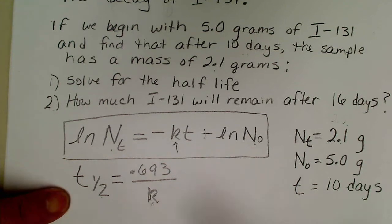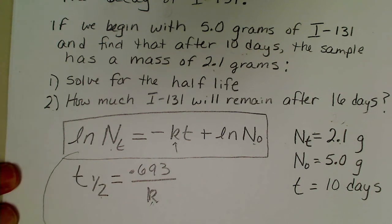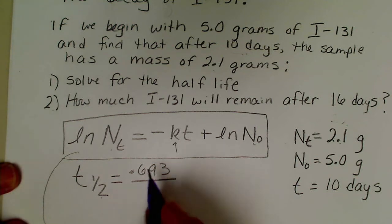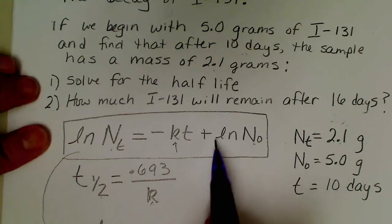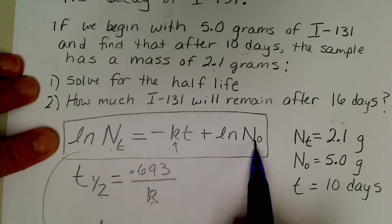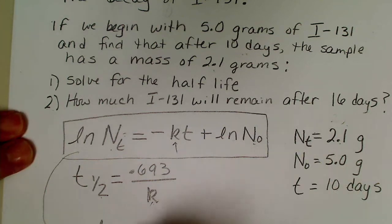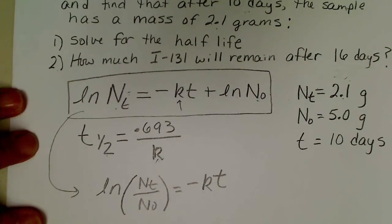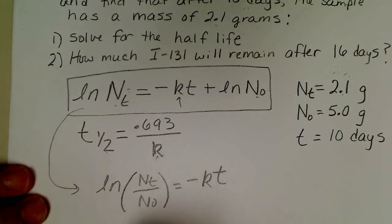We can use the first order rate law to solve for k and once we have k then we can solve for t₁/₂. I'm going to plug these given values into this equation using the condensed equation. If I rearrange this, we'd have ln(Nₜ/N₀) equals negative kt.